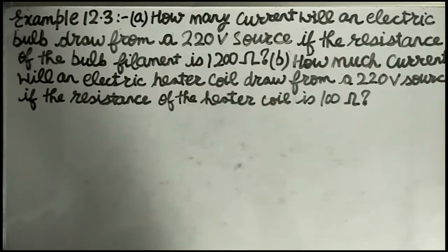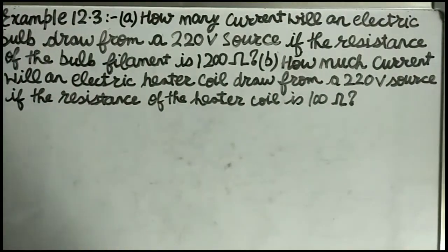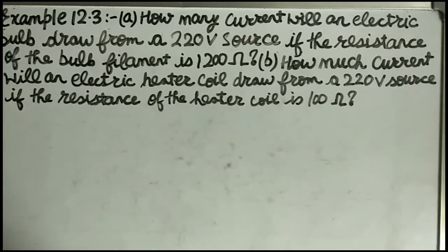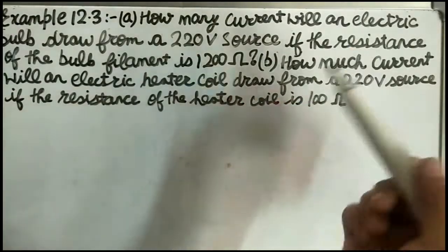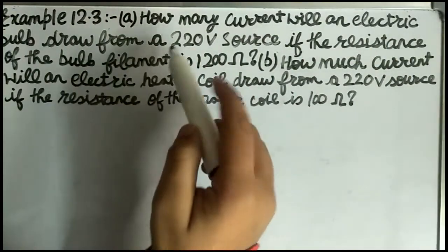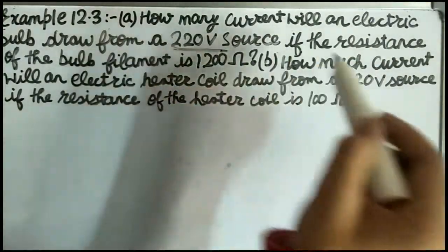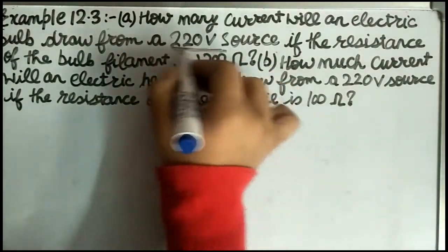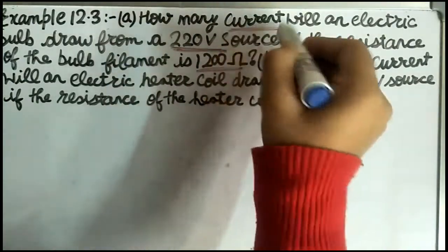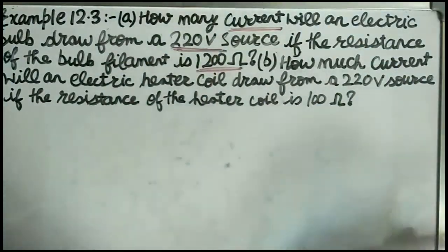Example 12.3: How much current will an electric bulb draw from a 220 volt source if the resistance of the bulb filament is 1200 ohm? This question has two parts. Part one: how much current will the electric bulb draw from a 220 volt source with resistance 1200 ohm?